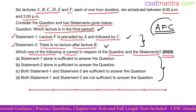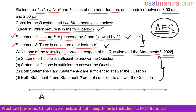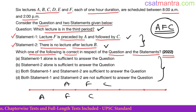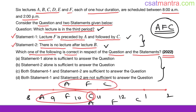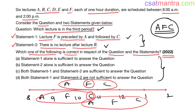The group A-F-C can be placed in different positions across the 8, 9, 10, 11, 12, 1, 2 slots. When placed one way, the third period is C; another placement gives F in the third period; another gives A. Since there are multiple possible answers, Statement 1 alone is not sufficient to answer the question with certainty.